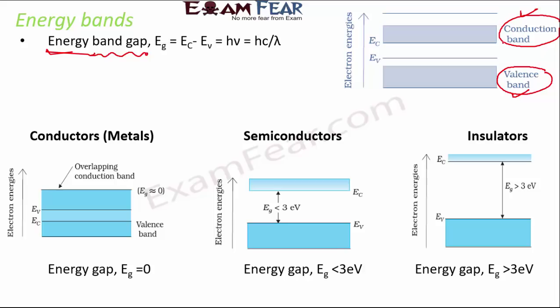Electric conductivity happens only when there are electrons in the conduction band which are free to move, because current is basically constituted by moving electrons. The energy band gap is the difference in the energy level of the conduction band and the valence band.